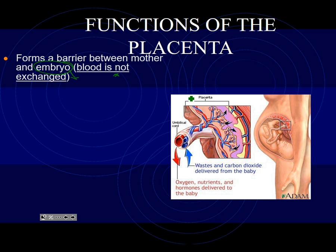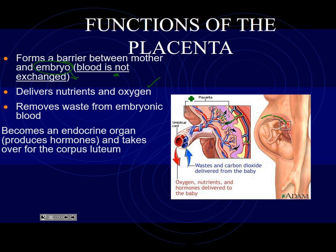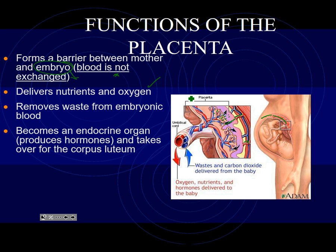The baby is sitting inside the abdomen upside down, and the placenta is all the way around the baby — it forms a barrier. Blood is not exchanged. It delivers nutrients and oxygen. Mom has blood vessels in her uterus — all those blood vessels that you shed during menstruation are existing there, dropping off oxygen, which diffuses across to the baby. Sugars, proteins, and fats are also diffusing across into the baby's blood. The placenta also becomes an endocrine organ — it produces the hormones that maintain pregnancy.